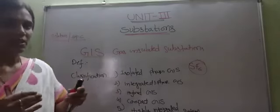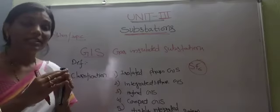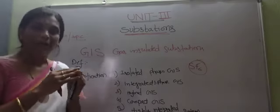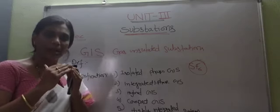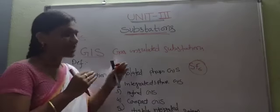So gas insulated substation is a substation which is encapsulated by non-magnetic material with SF6 gas.